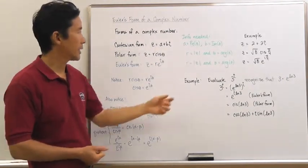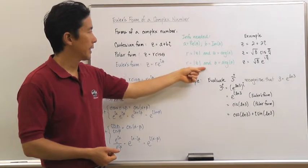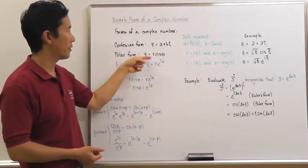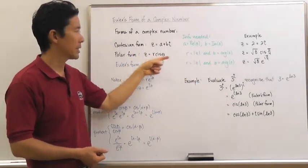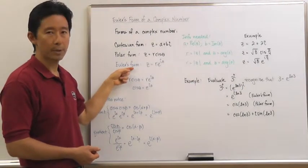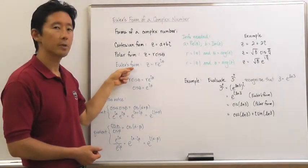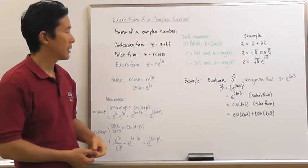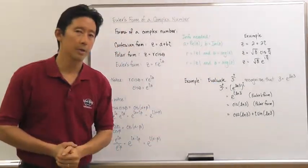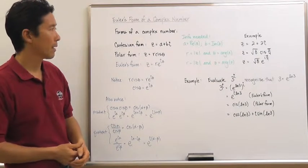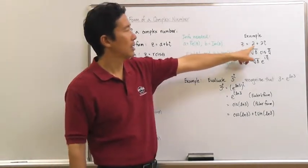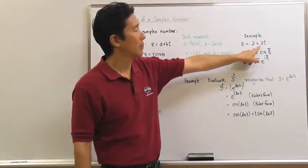Take a look at the information that's needed, and what you should notice is that the information needed to get a polar form of a complex number is exactly the same information we need to get that same complex number into its Euler's form. All of these are equivalent forms of a particular complex number.